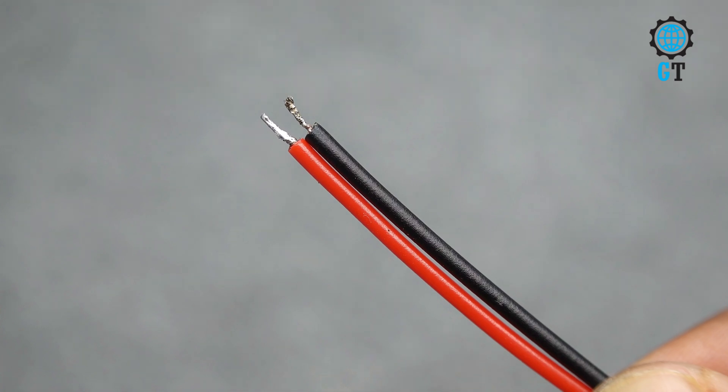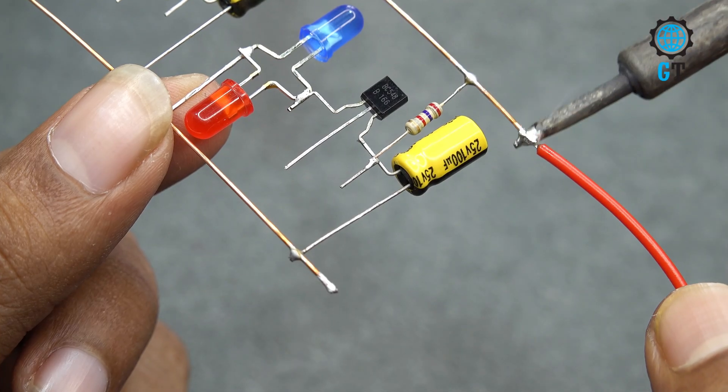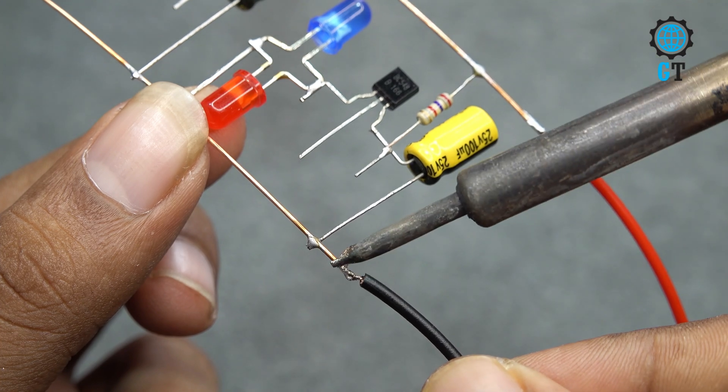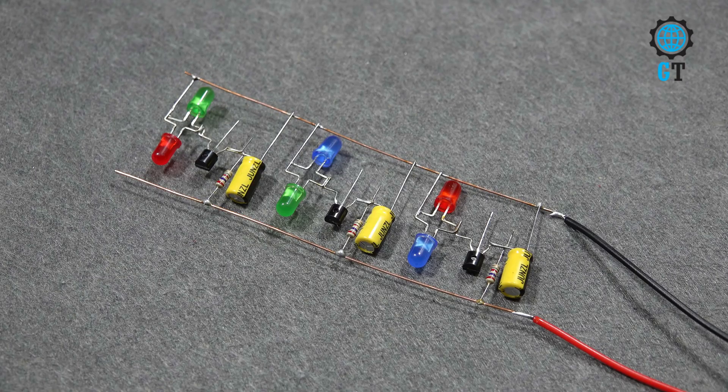For power source, we're using DC 12 volt. We connect the positive cable with the resistor and negative cable with the negative lock of LED. Our circuit is now ready for use.